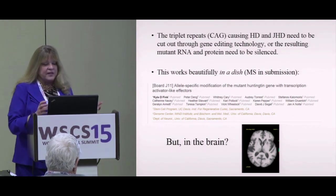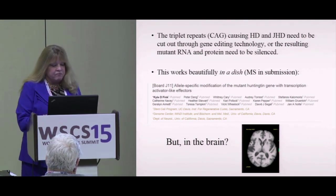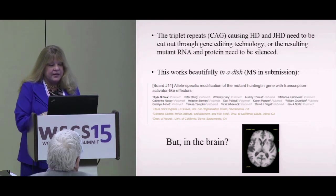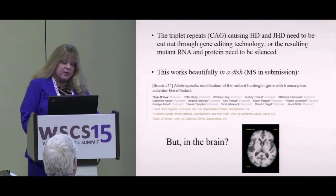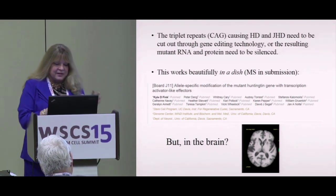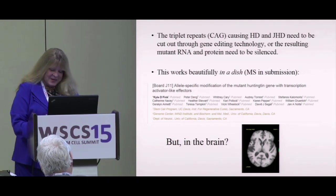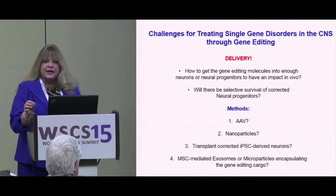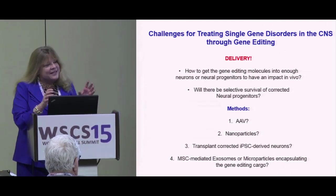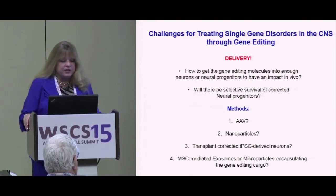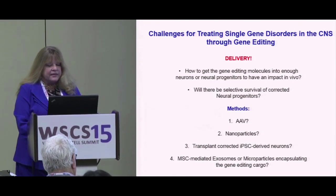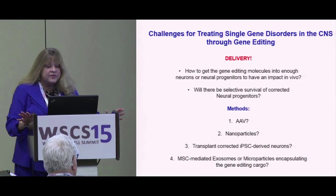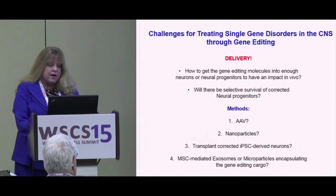This works beautifully in a dish — we can add whatever gene editing we like. We're working with TALENs right now because the smaller CRISPRs weren't available when we started. But the challenge is how to get this into the brain and have it work there. The key challenge for treating single gene disorders in the CNS through gene editing really comes down to delivery. Amazing tools, amazing accuracy, fewer off-target effects — but how do we get it into the site where it's needed? How do we get these gene editing molecules into enough neurons or neural progenitors to have an impact in vivo?